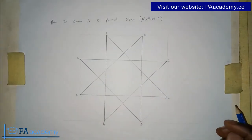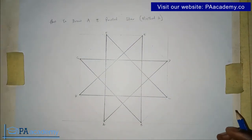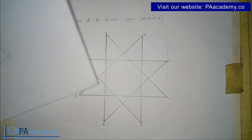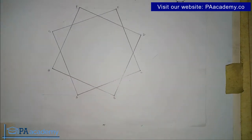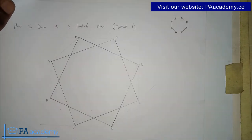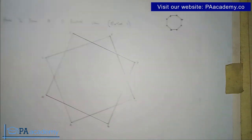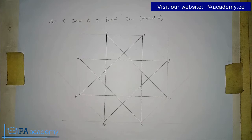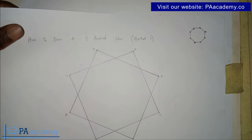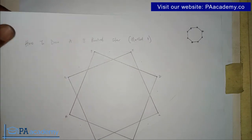So now you can see we already have our 8-pointed star. Let's quickly compare it with what we have in Part 1. This is what the Part 1 star looks like — the Method 1 result. And this is Method 2. Whichever one you find more convenient, let me know, and also let me know what differences you notice between the two methods.